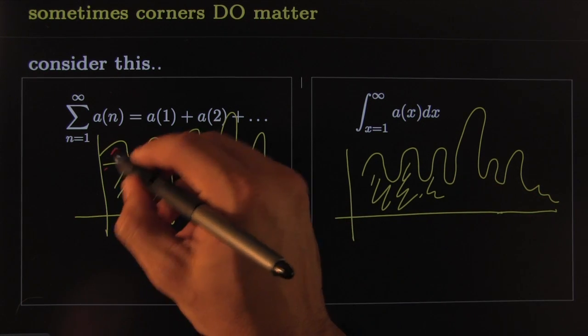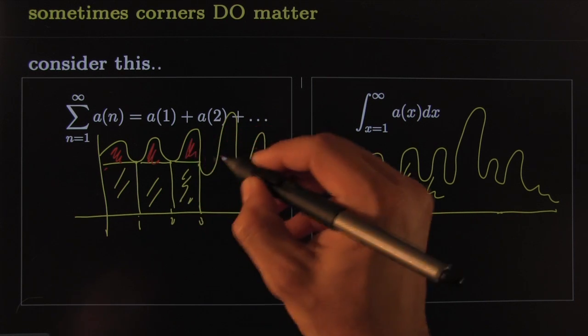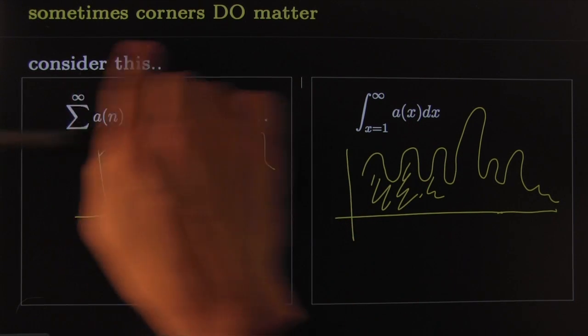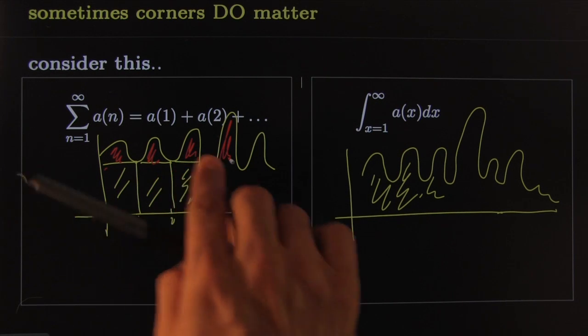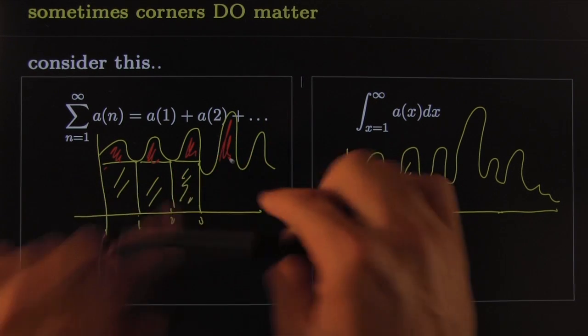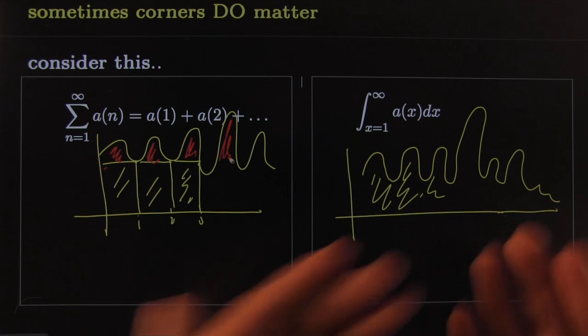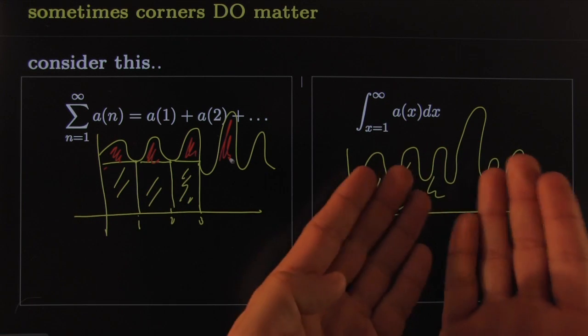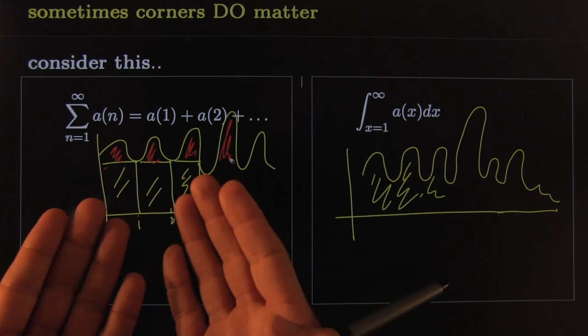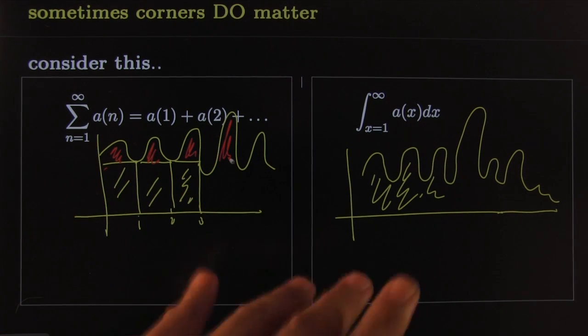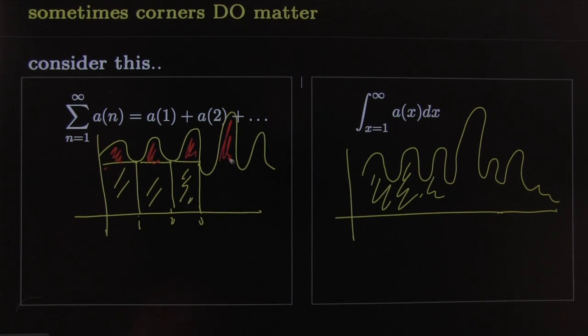Look at the error here - the error is big, big, big, and it doesn't seem to be getting any better. So sometimes the corners do matter. When you have some weird function, this corner may add up infinite amount of area, in which case convergence or divergence of the integral may not be a good indicator of the convergence or divergence of the series. Clear?